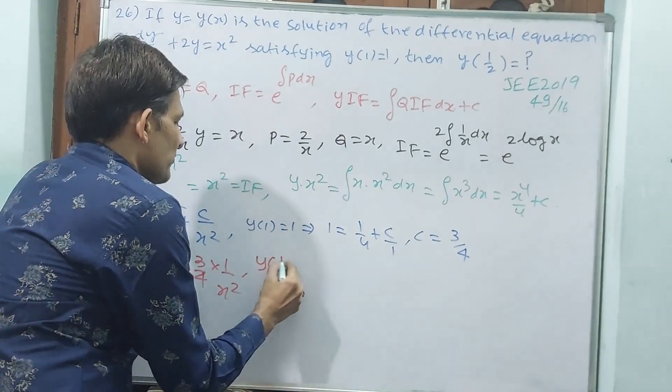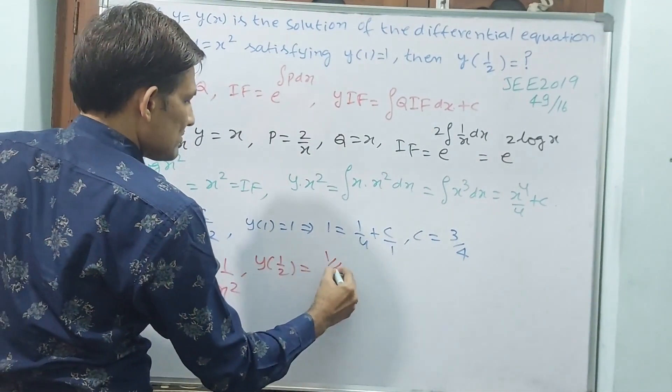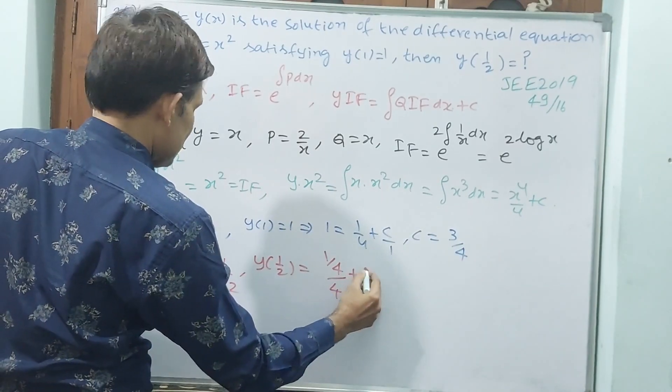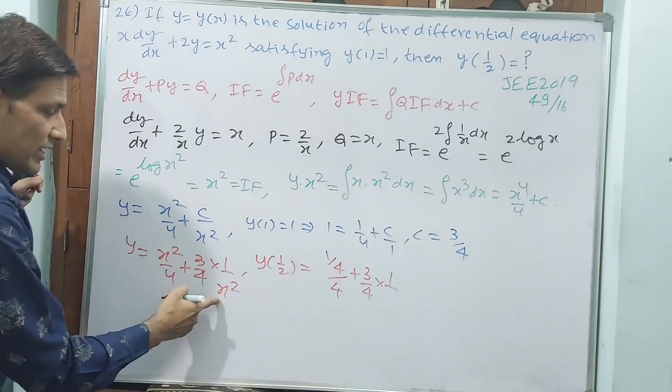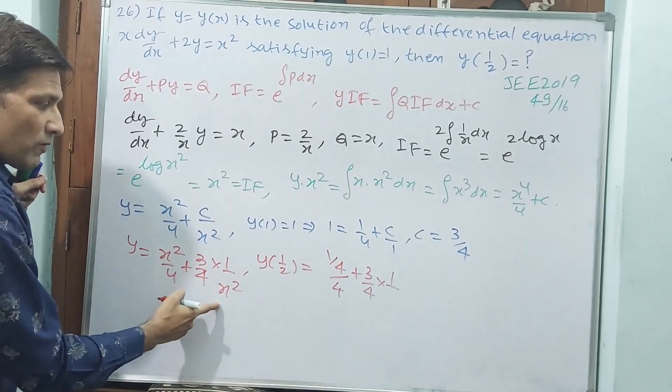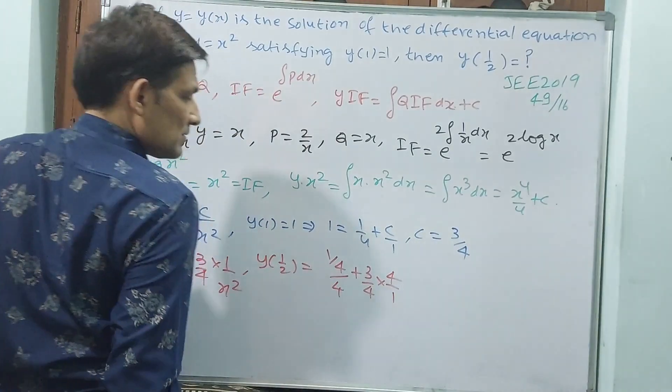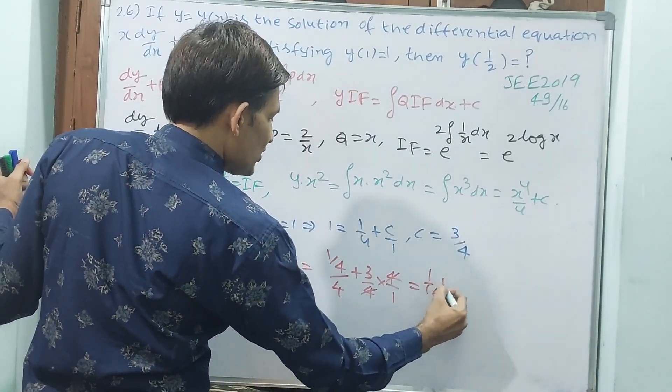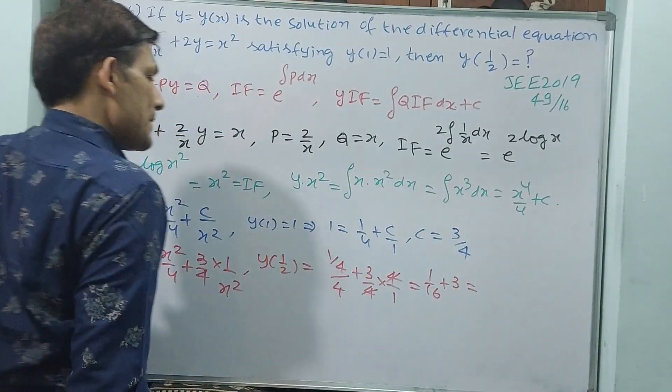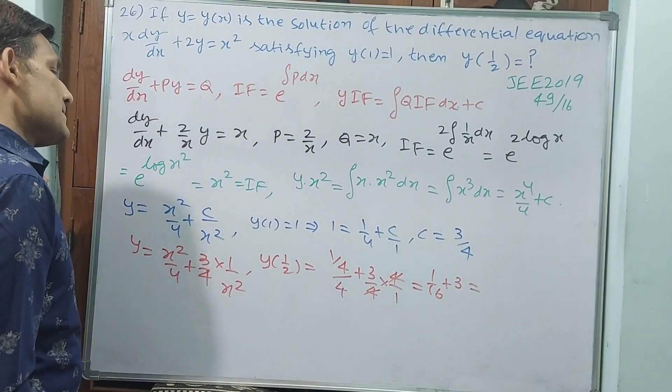Now y of 1 by 2 equals 1 by 4 by 4 plus 3 by 4 into 1 by 1 by 4. 1 by 4 will come. Now y of 1 by 2 means that equals 1 by 16 plus 3.